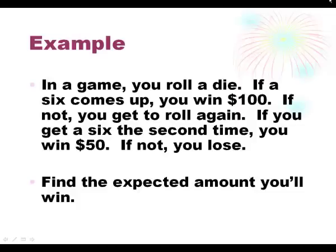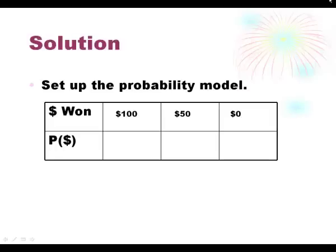Here's our first example. In this game we're rolling a die. If a 6 comes up the first time you win $100. If not, then we roll again. If the 6 comes up the second time then you win $50, and if not then you lose the game after 2 rolls if you didn't get a 6. We're going to find the expected value for this game.